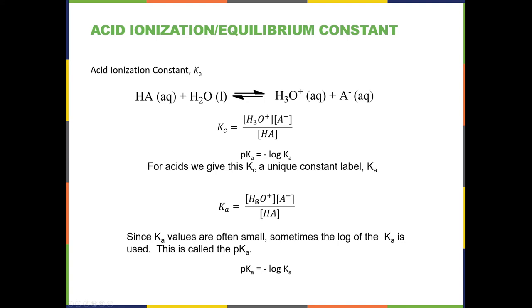The point is that Kₐ is the same as Kc — you're not learning something new; you write Kₐ instead of Kc. Because these values are often very small — like 10⁻⁶ — we use pKₐ, which equals the negative log of Kₐ. This converts 10⁻⁶ to 6, a more convenient number. Similarly, pH = −log[H₃O⁺]. The negative log just makes the number more manageable.